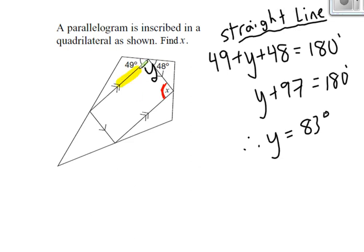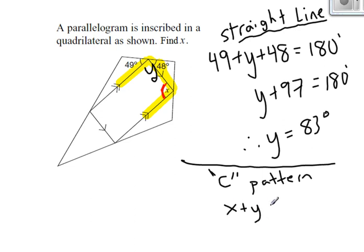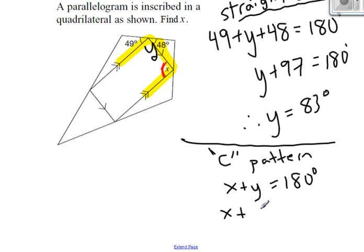In a parallelogram, we have parallel sides. Because we have parallel sides, we have the parallel line theorem in play. I've just traced out a C pattern, and we know that the angles in a C pattern add to 180. I might write 'C pattern' as my justification. Then I can say X plus Y equals 180 degrees. Since Y is 83 degrees, I can solve for X. 180 minus 83 means X is 97 degrees.